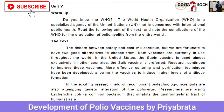Now to the text: the debate between safety and cost will continue, but we are fortunate to have two good alternatives to choose from. Both vaccines are currently in use throughout the world. In the United States, the Sabin vaccine is used almost exclusively; in other countries the Salk vaccine is used. Research continues to improve these vaccines. More effective culturing and purification techniques have been developed, allowing the vaccine to induce higher levels of antibody formation.